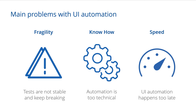The first one is around fragility — the problem that your tests are usually not stable enough and keep breaking. Sometimes you write your tests today, they work, you run them again tomorrow, and although the application is still working, your tests start failing. They become flaky.